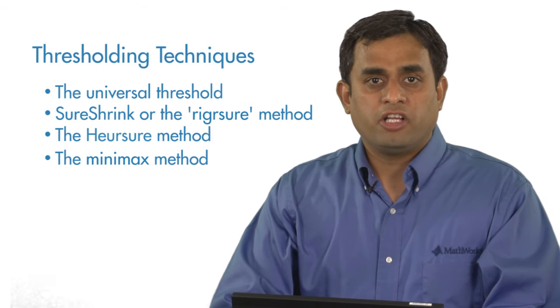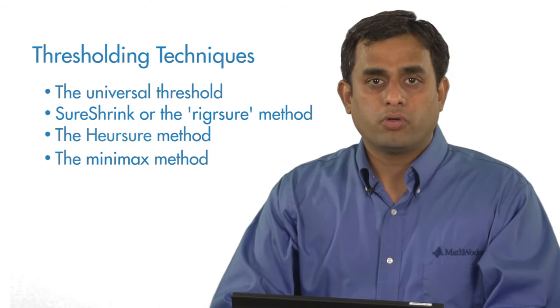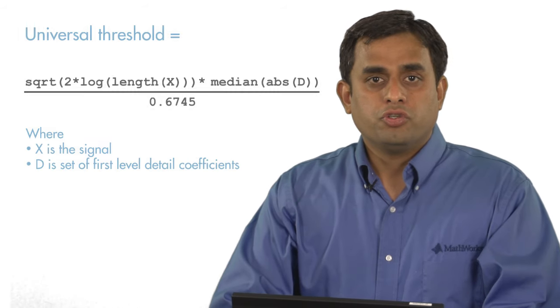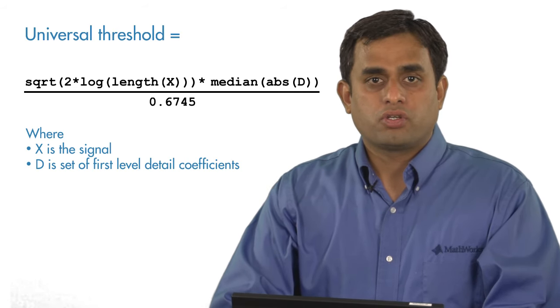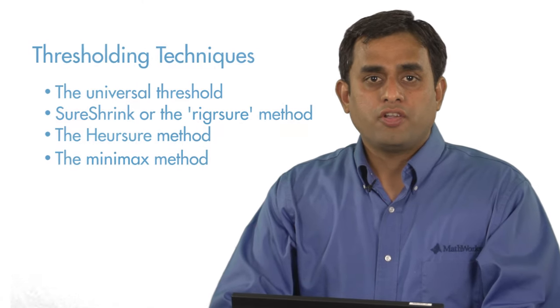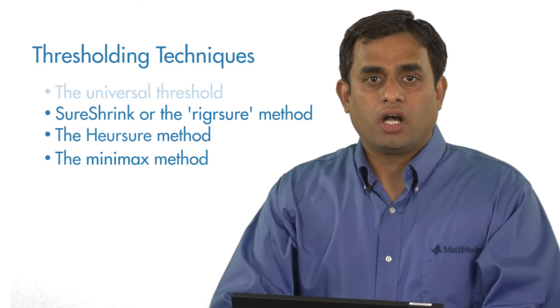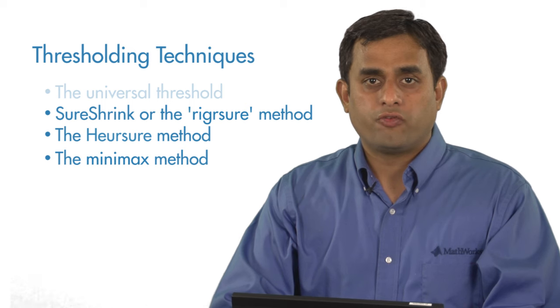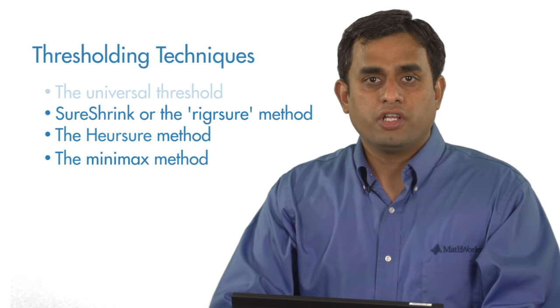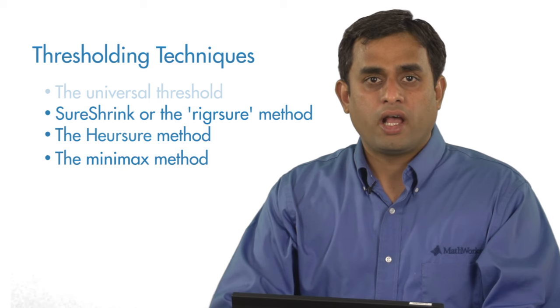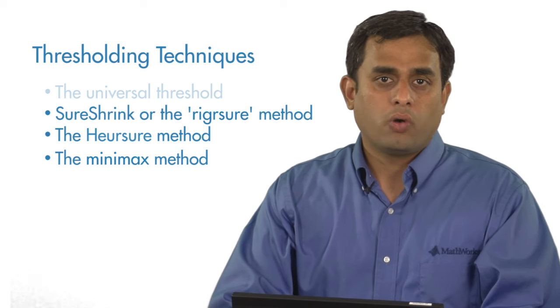There are four main techniques available in MATLAB to help you compute a threshold. The universal threshold is the simplest to compute and is computed using this formula. Manually computing the threshold for the other three denoising techniques is not as straightforward. Instead, you can use MATLAB for this so that you can focus on using the threshold value without worrying about how it is computed.